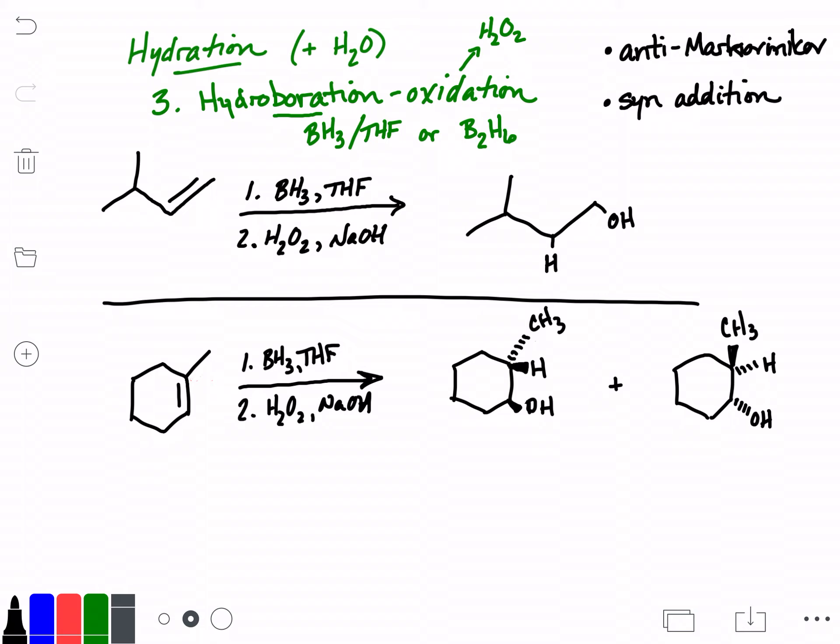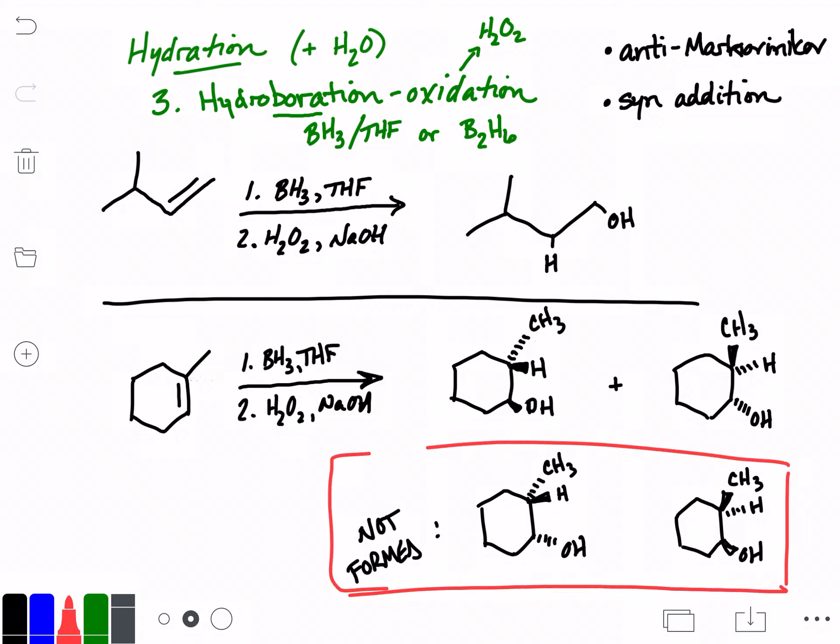What we would not form would be the two that would show an anti addition, and that is where the hydrogen and the hydroxide are on opposite sides of the ring. These are not formed.